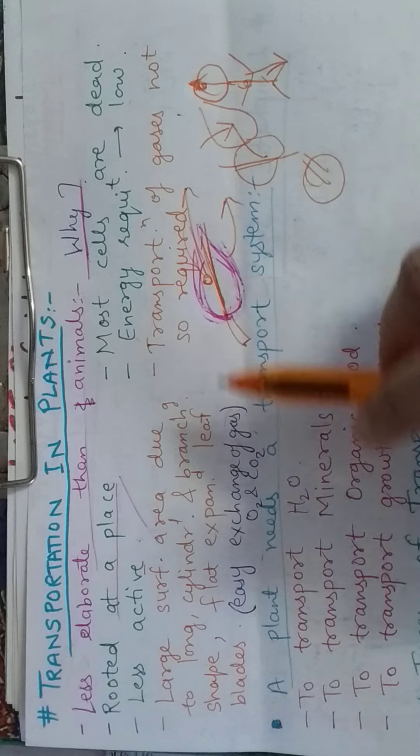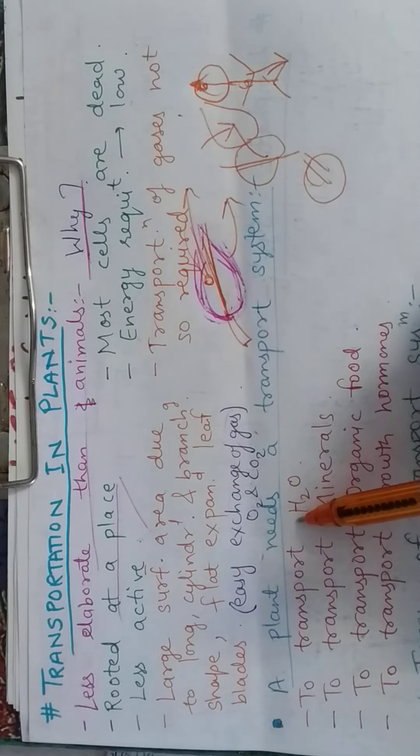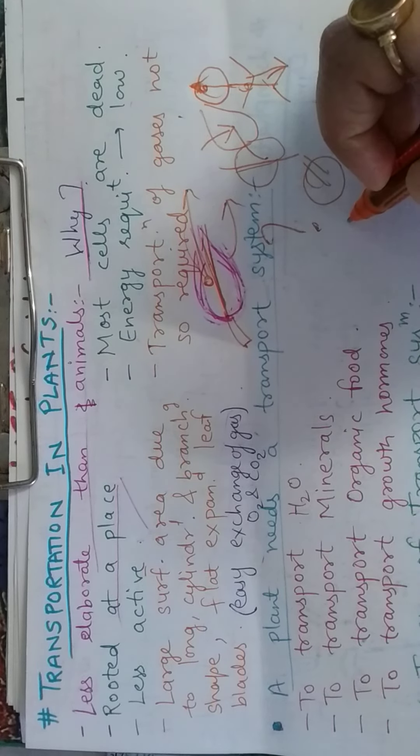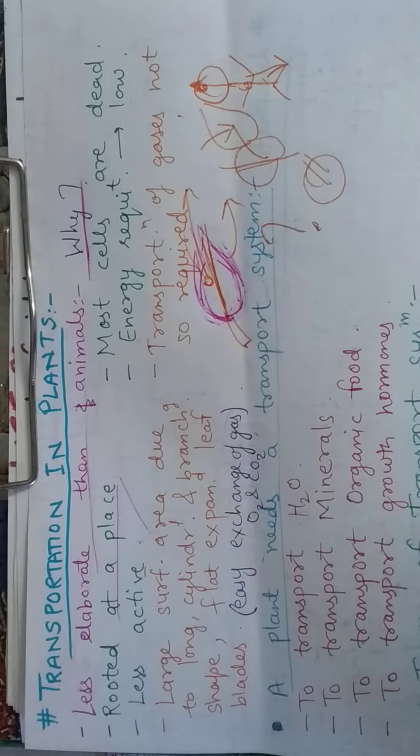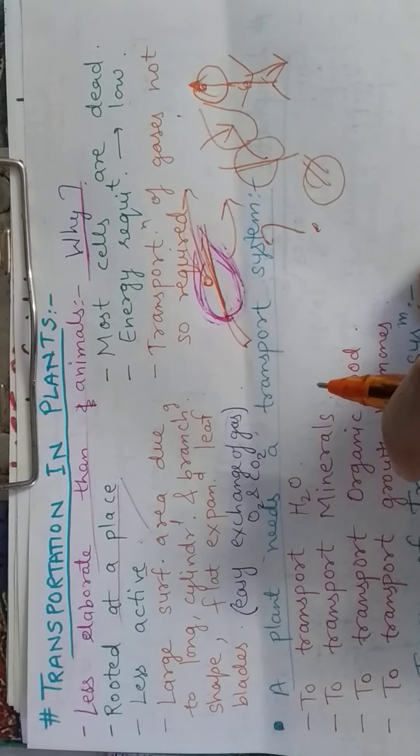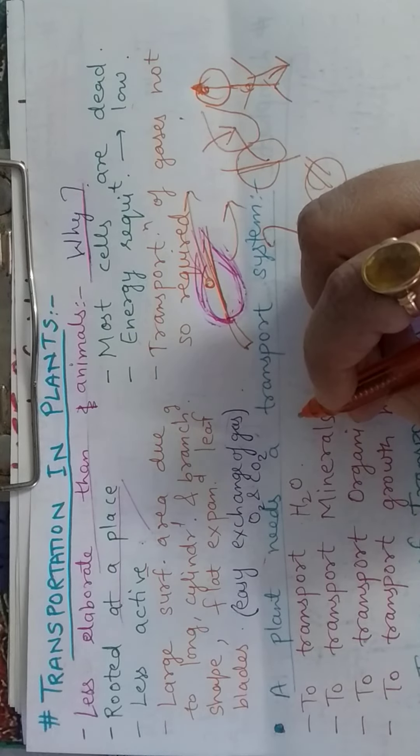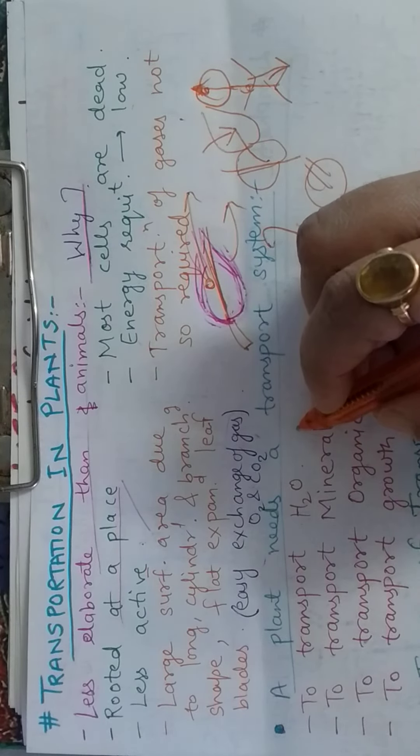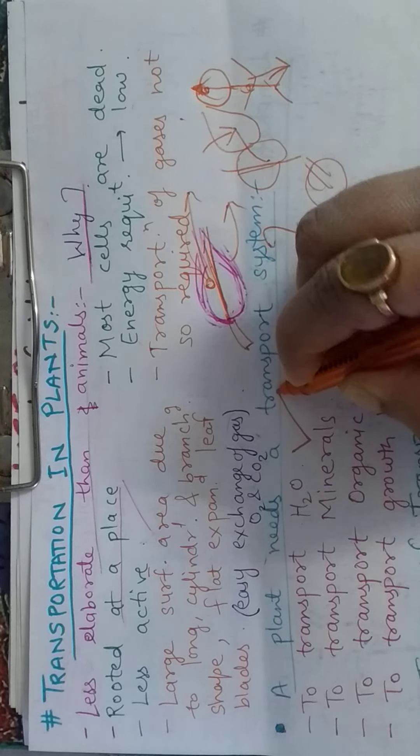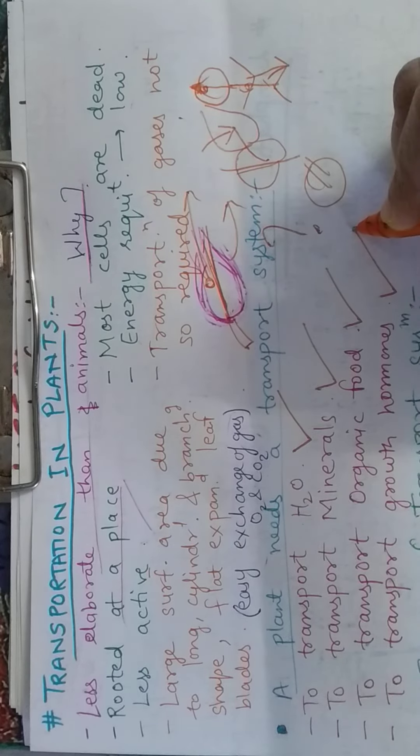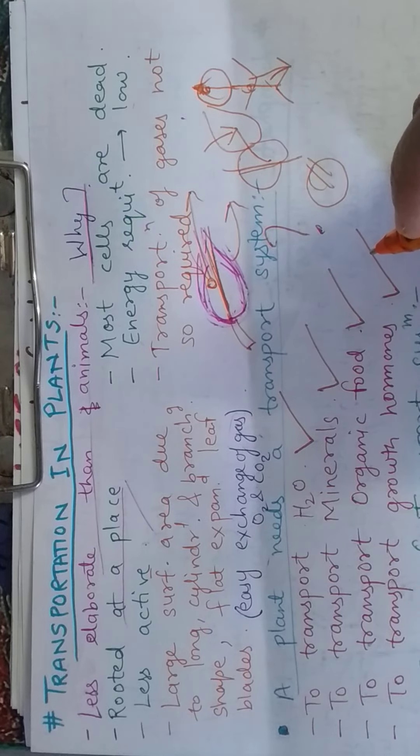So they are exchanging gases, but this question arises in our mind: why does a plant need a transport system? When it doesn't need transportation of gases, why do they need a transport system? So they have to transport other things, not just gases. They need water transport, mineral transport, organic food and growth hormone transport. That's why transportation in plants takes place. So this is the overview.